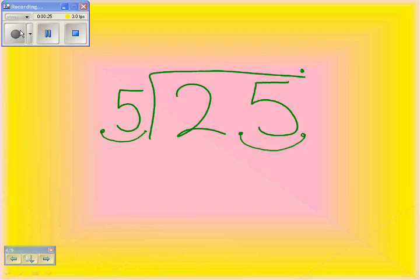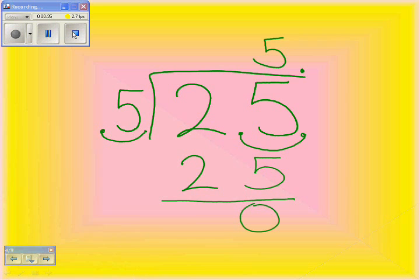5 can go into 25 five times. 5 times 5 is 25. 25 minus 25 equals 0, so your answer would be 5.